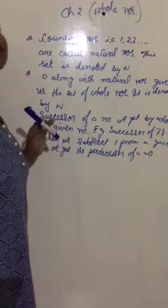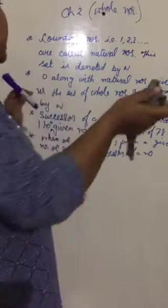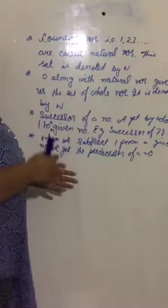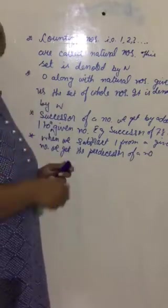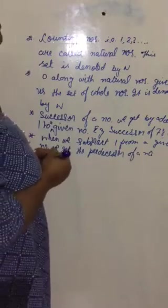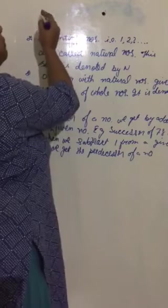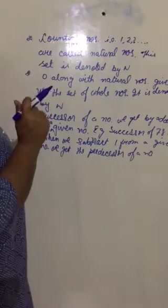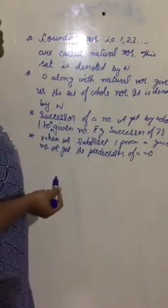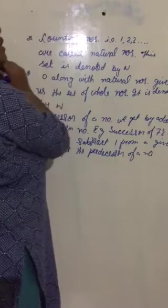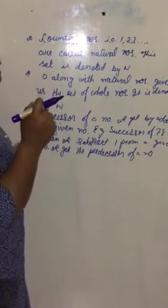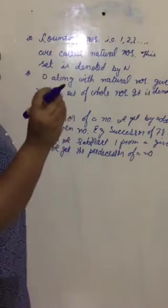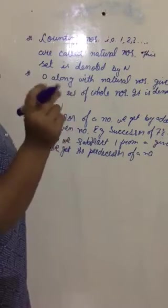Now, this number has got a place on the number line. So, number line in your primary class you have learnt how to plot number line and plot natural numbers on the number line. Now, all numbers as you go and learn more topics you will see that every number has got a place on the number line. So, how do we place the natural numbers on the number line? Now, for number line you have to be very specific. That is, we take unique distance between consecutive numbers. Now, what are consecutive numbers? Numbers which comes one after another are called as consecutive numbers. So, unique distance does not mean it has to be 1 centimeter or 1 millimeter or 1 meter. Unique distance means that the gap between consecutive numbers should be same.